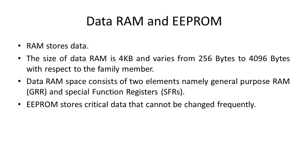The next one is data RAM and EEPROM. RAM stores data. The size of data RAM is 4KB and varies from 256 bytes to 4096 bytes depending on the family member. Data RAM space consists of two elements: general purpose RAM (GPR) and special function registers (SFRs). EEPROM stores critical data that cannot be changed frequently.